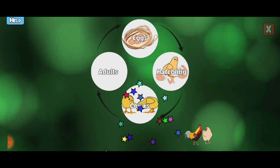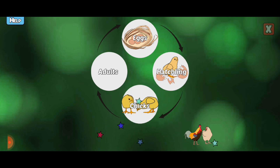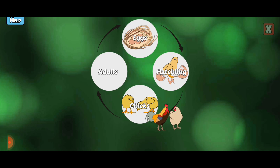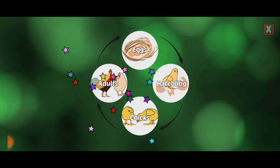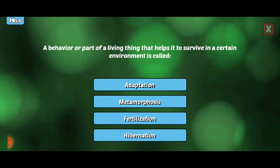Baby chicks grow very fast. Young females are called pullets and young males are called cockerels. Adult males are called roosters and females are called hens. Hens will lay eggs to continue the life cycle.